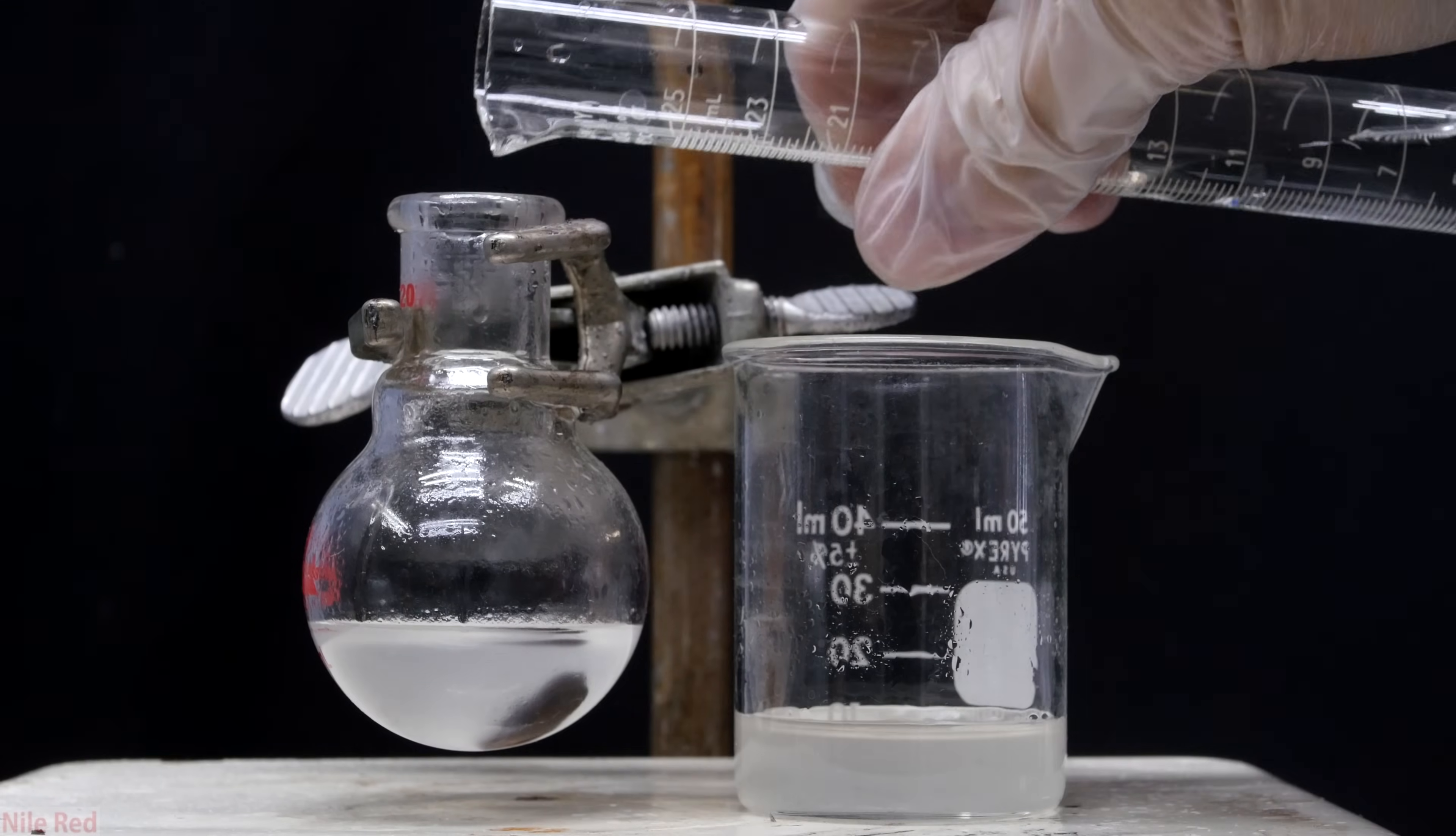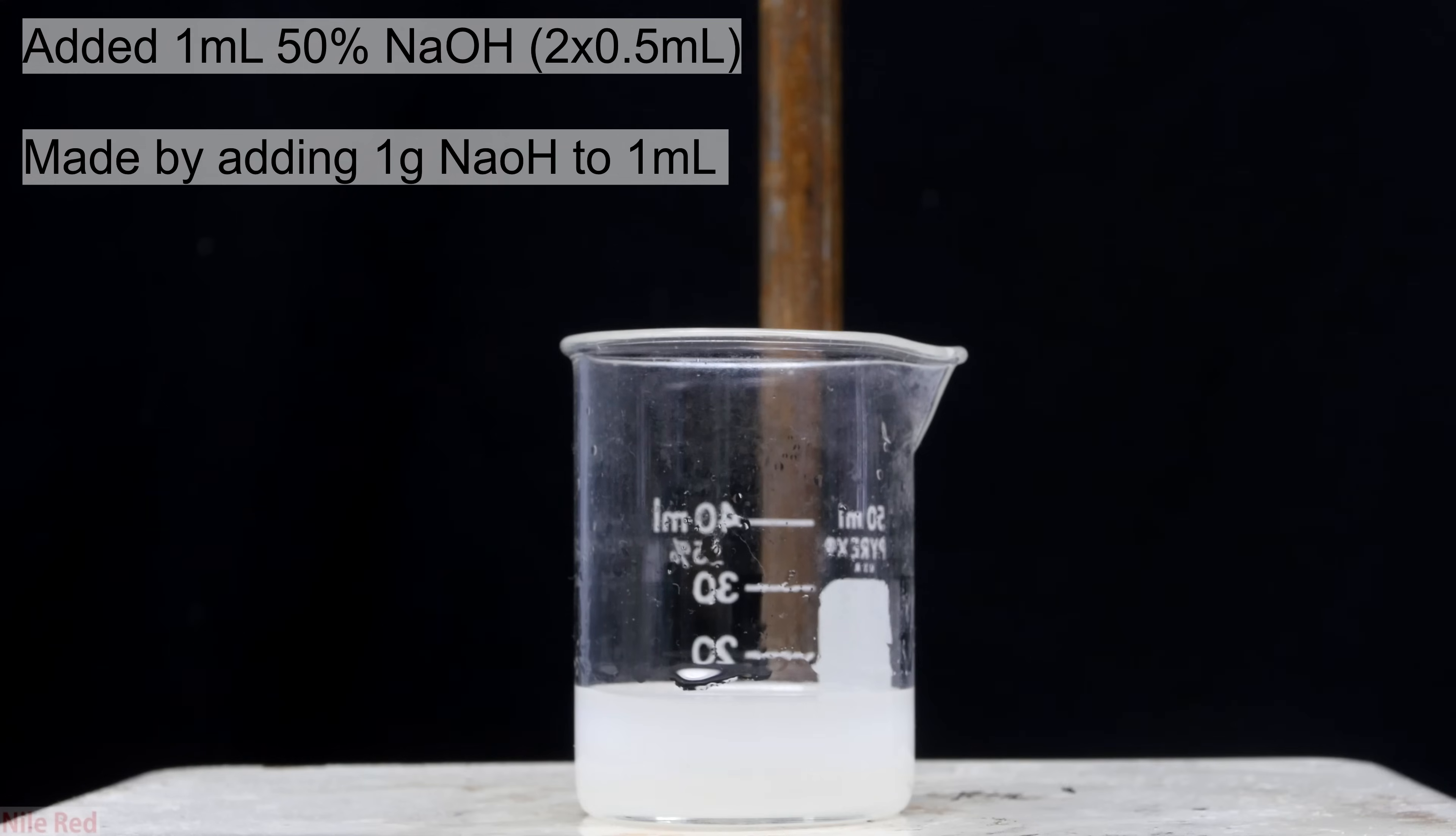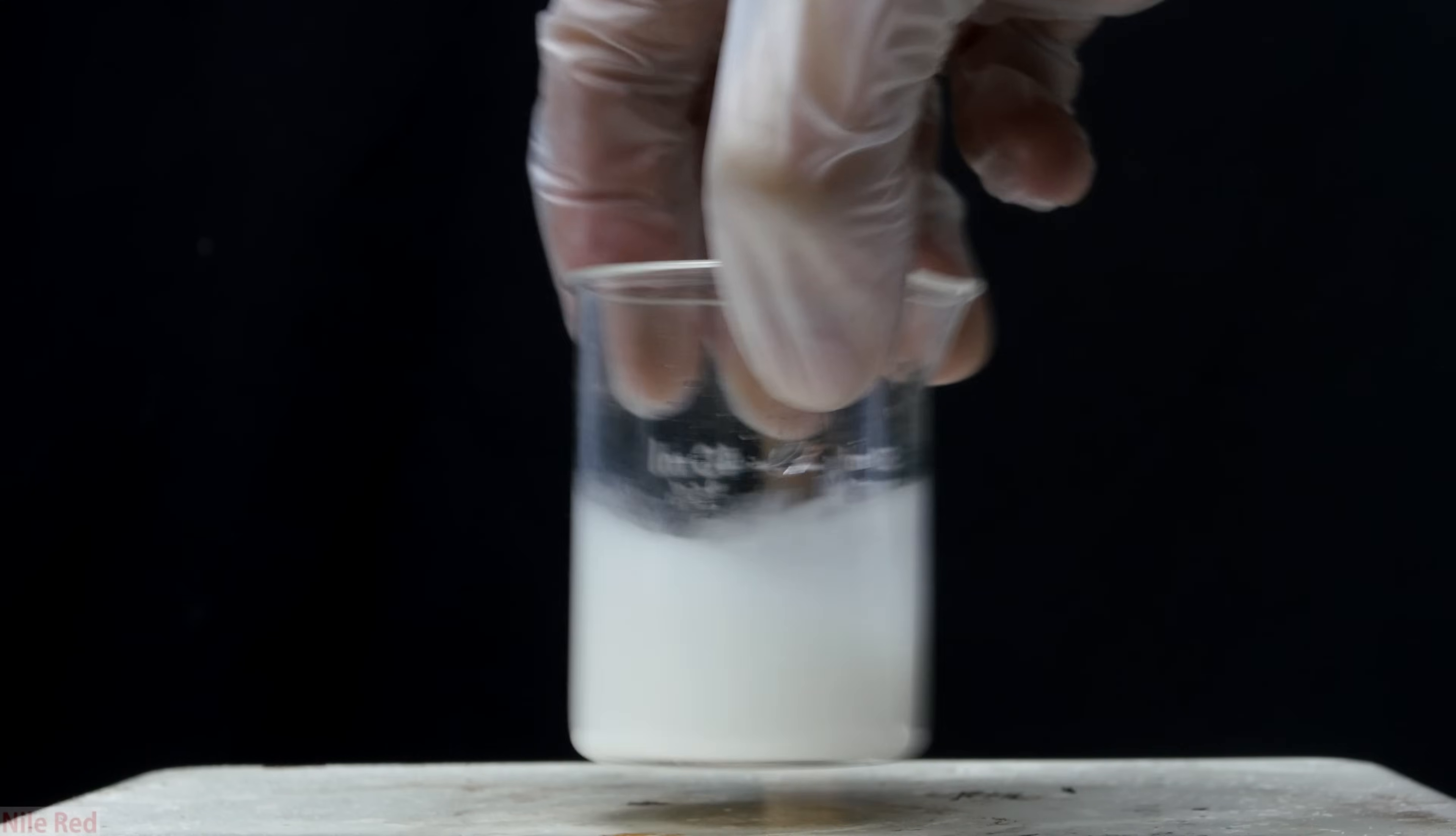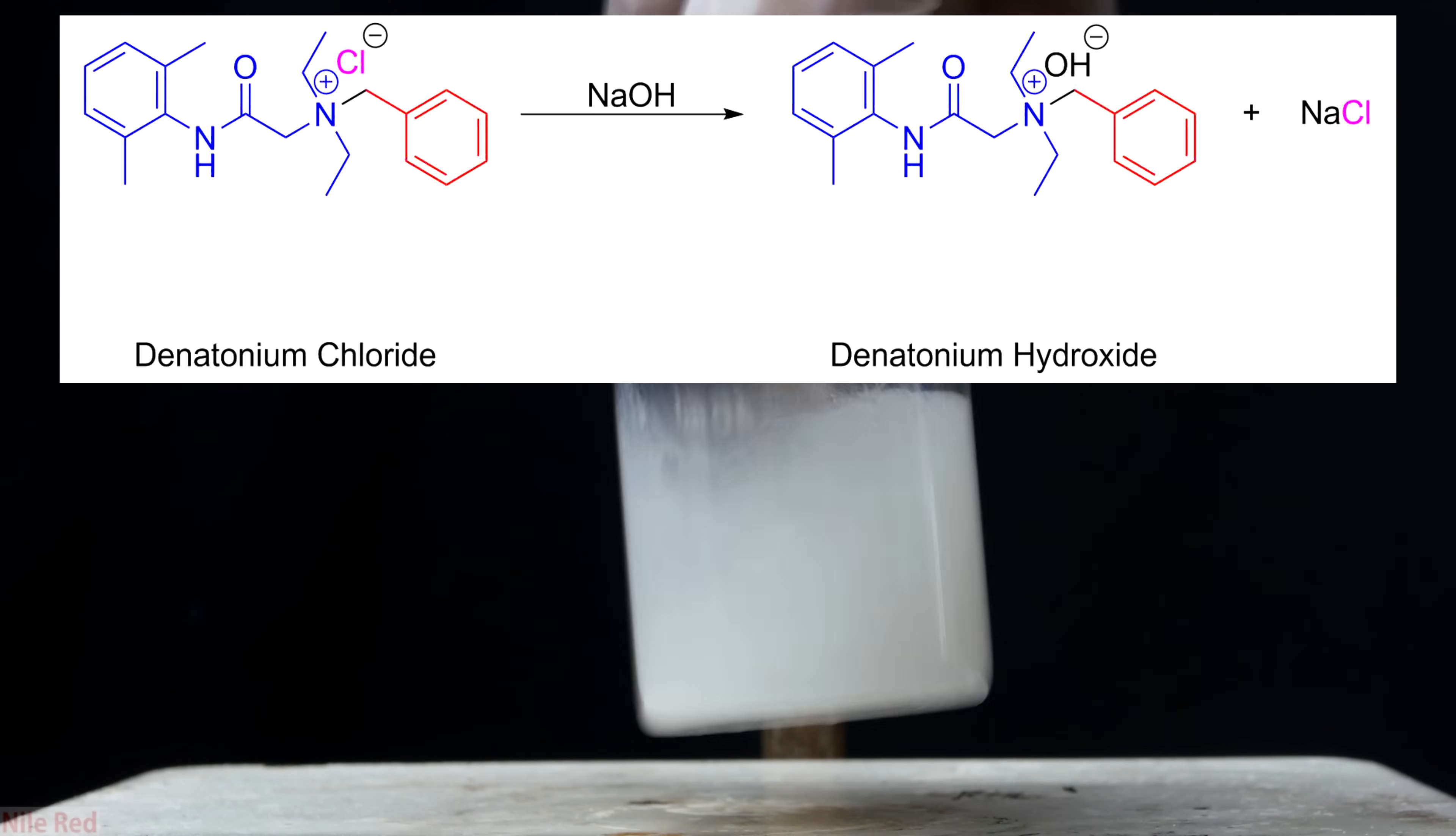The toluene layer in the round bottom flask was still a little bit cloudy, so I decided to wash it with a bit of water. After mixing it and letting the layers settle, the water was also transferred to the beaker. So now to our denatonium chloride is added about one milliliter of 50% sodium hydroxide. I added the sodium hydroxide solution in two portions of about half a mil each time. This can be made really easily by adding about one gram of sodium hydroxide to about one milliliter of water. It might be hard to see, but a little bit of white solid precipitated out. This white solid should be denatonium hydroxide.